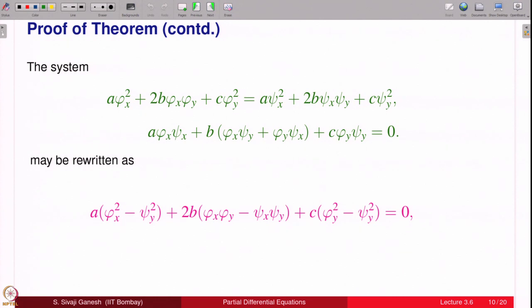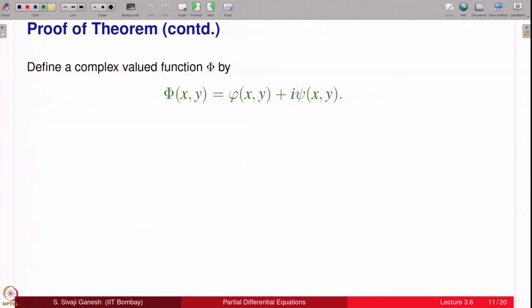This system may be rewritten as this. The first equation I simply transfer ψ, all these terms to the left hand side, and I take a common factor. So I get a(φ_x² - ψ_x²) + 2b(φ_x·φ_y - ψ_x·ψ_y) + c(φ_y² - ψ_y²) = 0. The second equation I am just multiplying with i because I have some idea what I want to do in the next slide. Otherwise it's the same equation multiplied with i. It tells us that some complex things are going to enter.